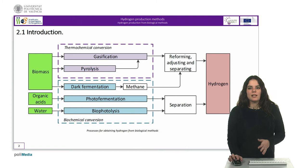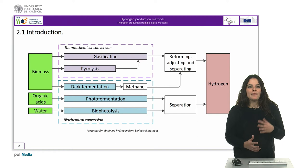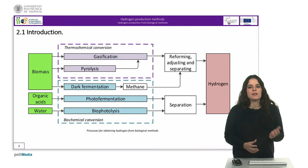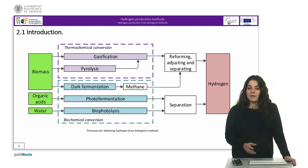Generally, thermochemical processes are used in the production of hydrogen in large-scale centralized systems, due to the manipulation of large quantities of biomass and the economy of scale required. We can distinguish between gasification processes and pyrolysis processes. In contrast, biological processes are often used in decentralized systems, being slower and more expensive than the thermochemical ones. Among these methods, we can find dark fermentation, photo-fermentation, and bio-photolysis.